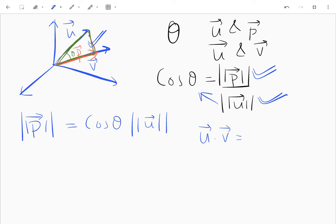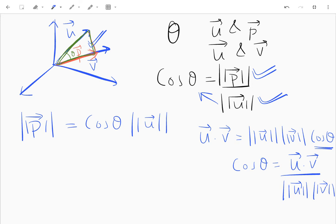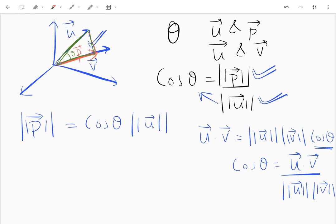So u dot v will be equal to the magnitude of u times the magnitude of v into cos theta. This is the standard definition of a dot product. Now from here I will evaluate the value of cos theta. So my cos theta comes out to be u dot v over norm of u norm of v, and now what I'll do is I'll substitute this value here into this.